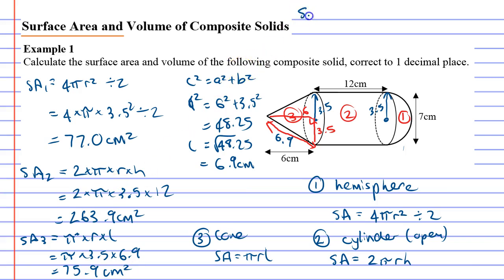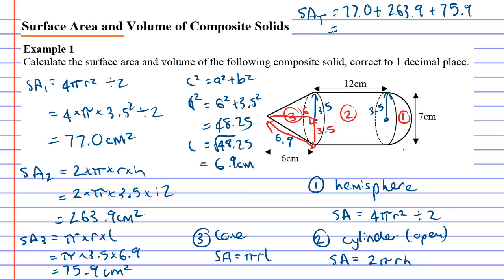Now for the total surface area, we add them all up: 77.0 for the hemisphere, plus 263.9 for the cylinder, plus 75.9 for the cone, giving a total surface area of 416.8 cm².